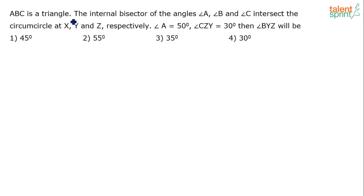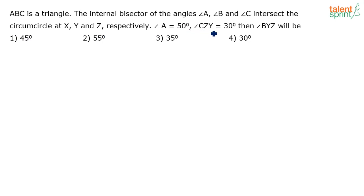ABC is a triangle. The internal bisectors of angles A, B and C intersect the circumcircle at X, Y and Z respectively. Angle A is 50 degrees. Angle CZY is 30 degrees.